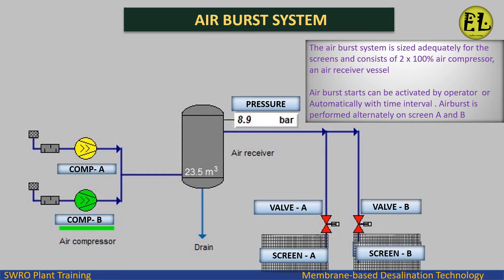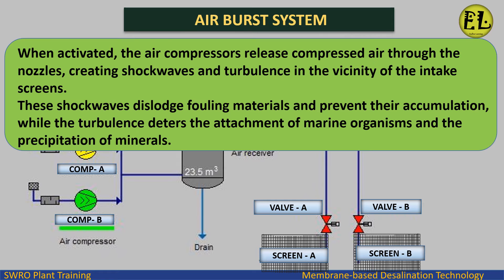Airburst starts can be activated by an operator or automatically at a set time interval. Airburst is performed alternately on screen A and B. When activated, the air compressors release compressed air through the nozzles, creating shockwaves and turbulence in the vicinity of the intake screens. These shockwaves dislodge fouling materials and prevent their accumulation, while the turbulence deters the attachment of marine organisms and the precipitation of minerals.